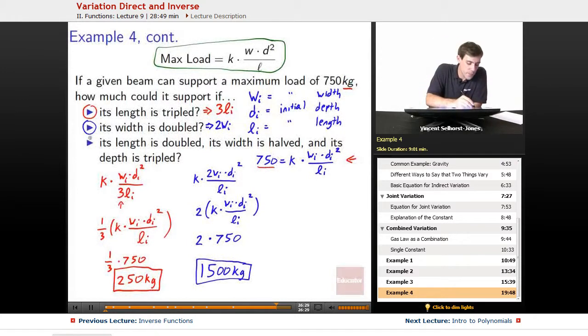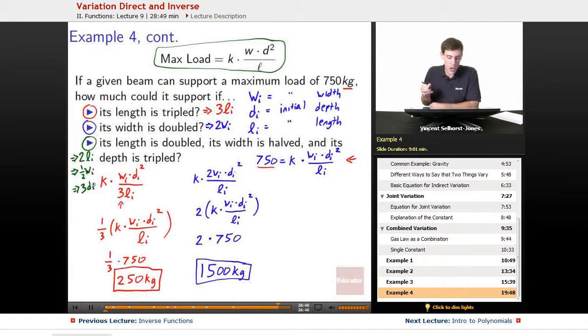Great. On to the last one. Ooh, this is a lot of things. Length is doubled. Length is doubled would mean 2 LI. Width is halved would mean half WI. And depth tripled would mean 3 DI.